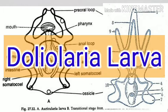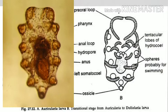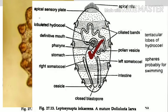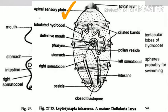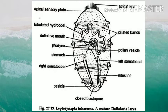The doliolaria larva is the next stage after auricularia larva. It has a barrel-like body with five ciliated bands surrounding it. The mouth or vestibule is on the ventral side for feeding. There is a neural sensory plate on the anterior side, and an apical tuft of cilia used for balancing while swimming.